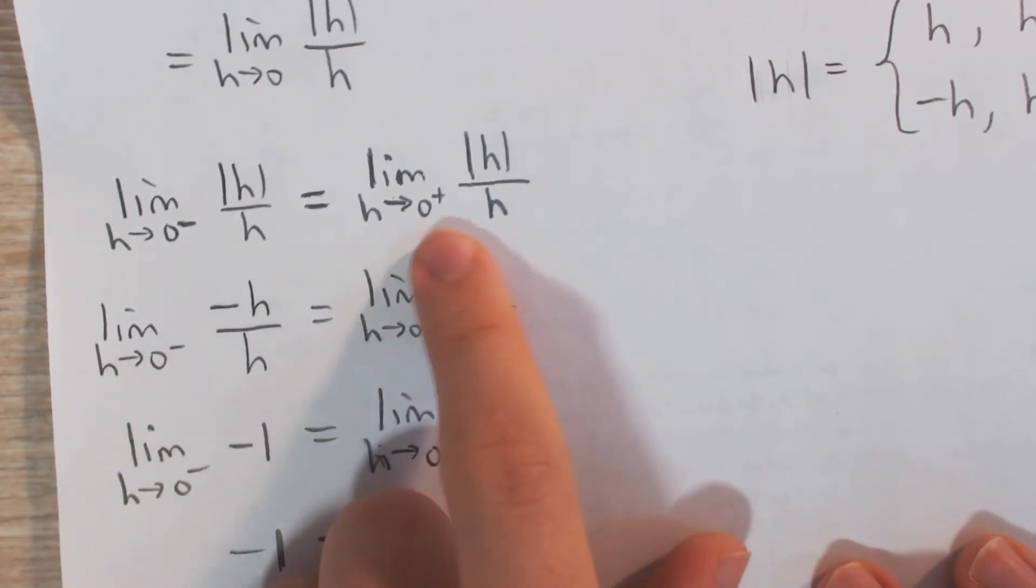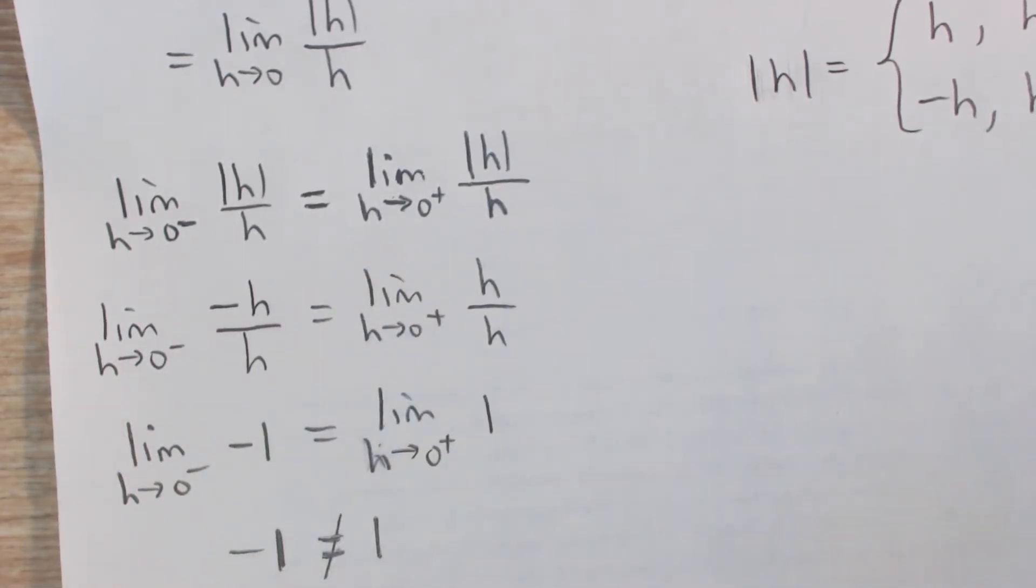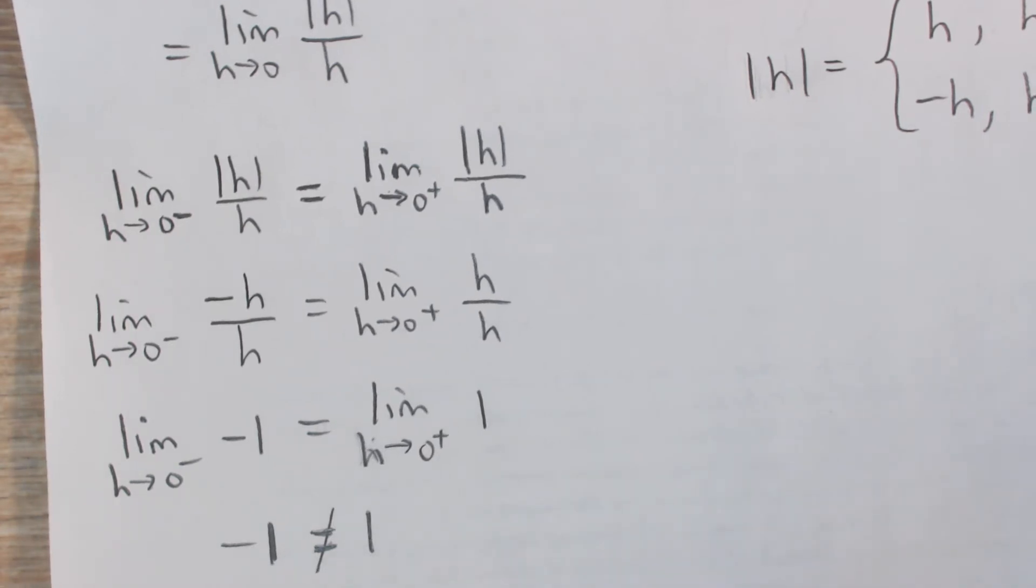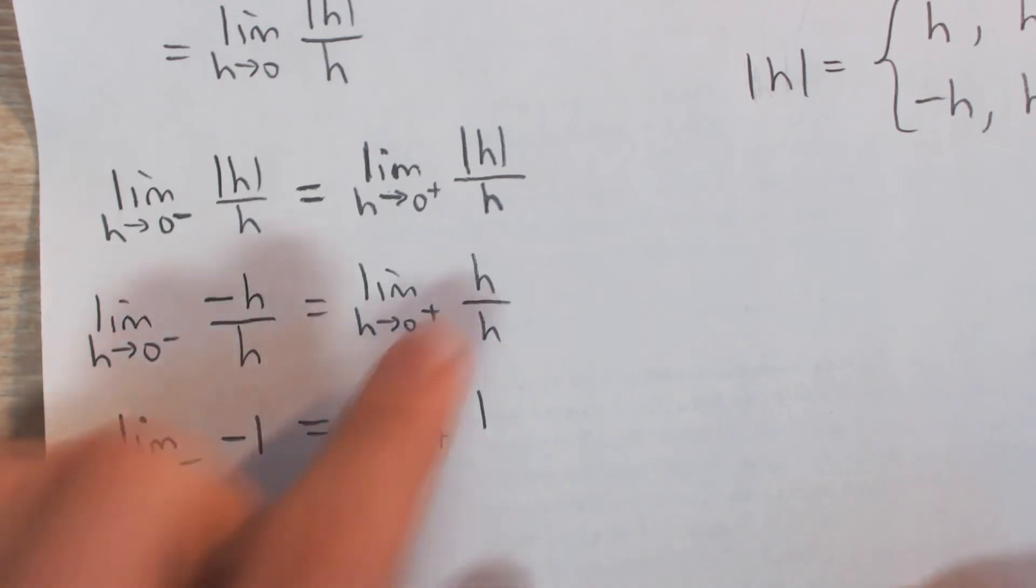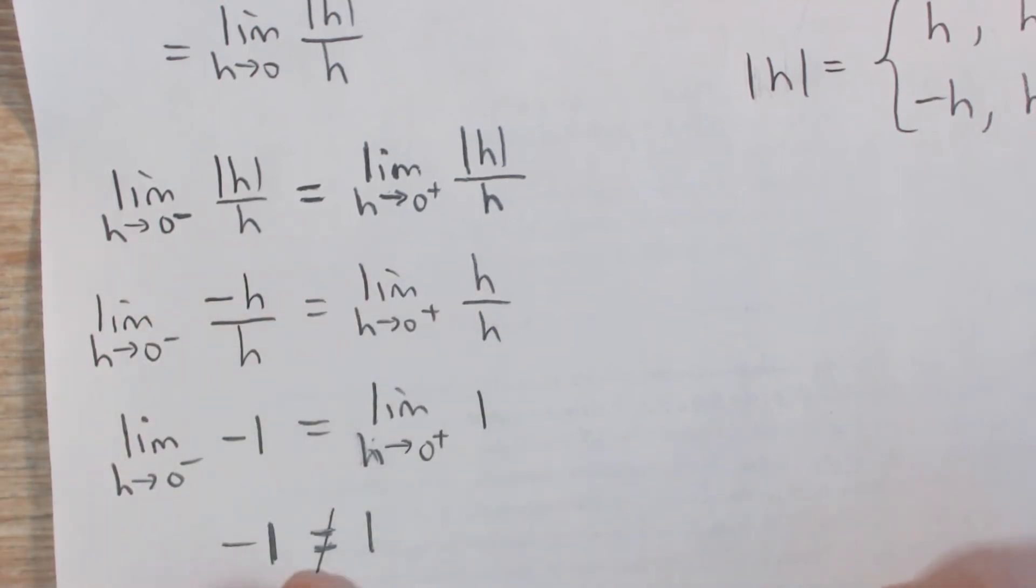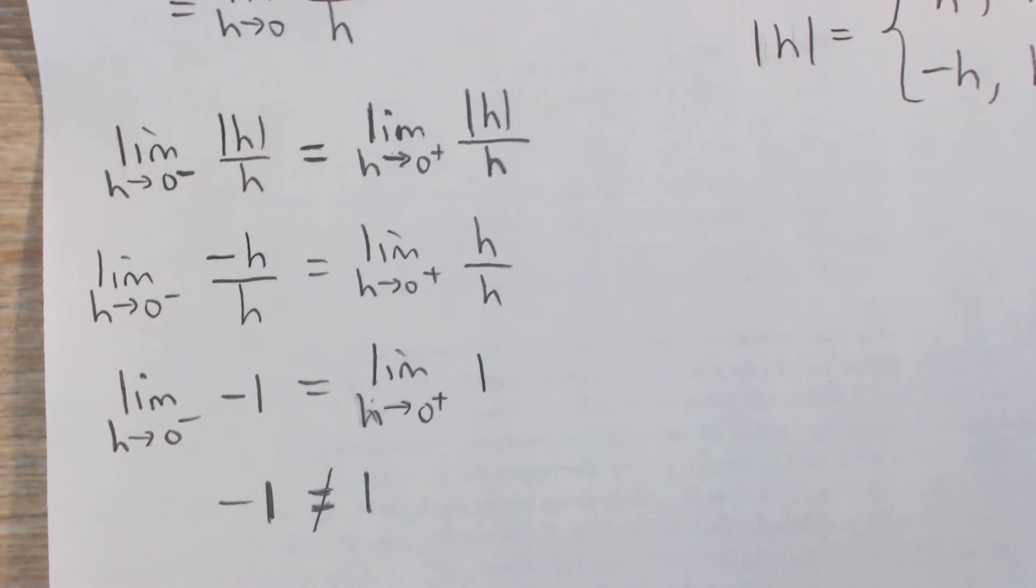On the other hand, when h is slightly positive, we're coming in from the right, then the absolute value of h is just h. Whatever number we choose, it's just going to be that exact number. And so we plug it in. h over h is 1. And so you can see here that the limits are not equal.